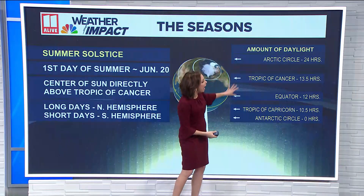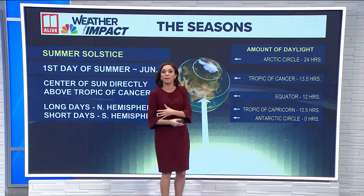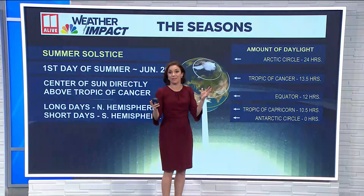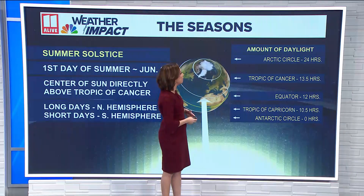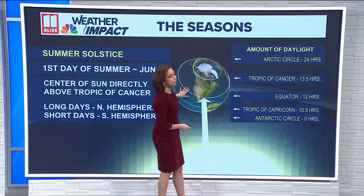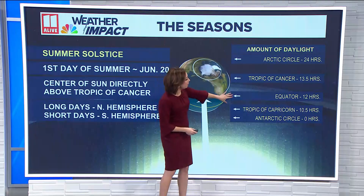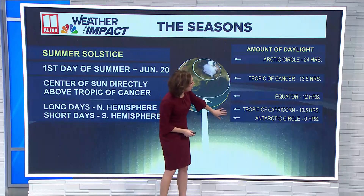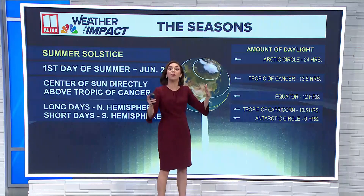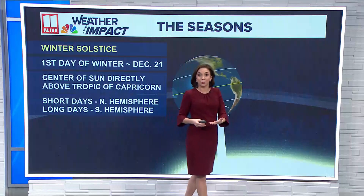You can see here some of those hours of daylight: in the Arctic Circle in the summertime, 24 hours of daylight each and every day right around the summer solstice. The Tropic of Cancer gets a little more than 12 hours of daylight, still about 12 hours over the equator, and then in the southern hemisphere that's when they're at their shortest amounts of daylight for the entire year.